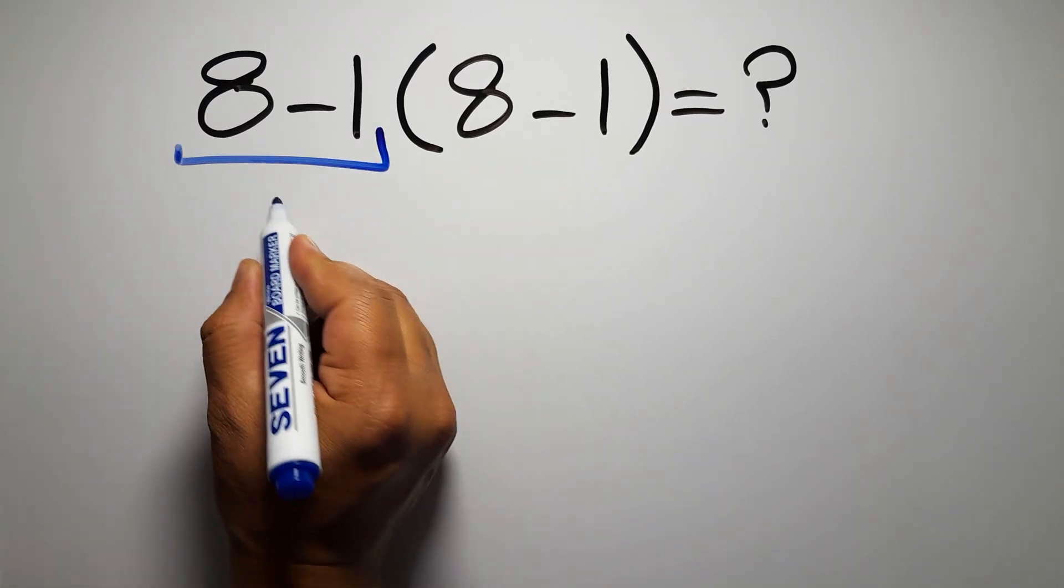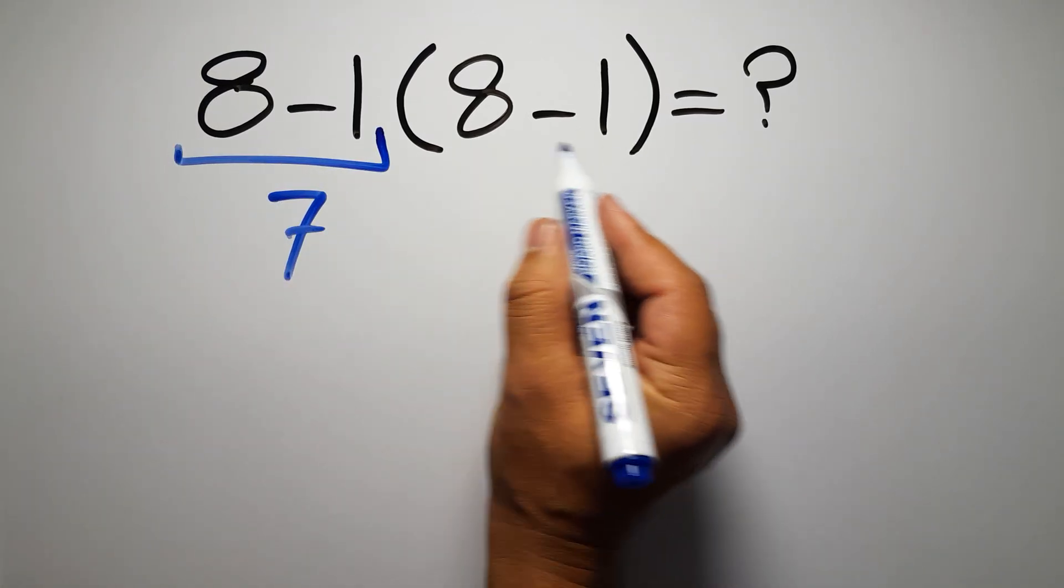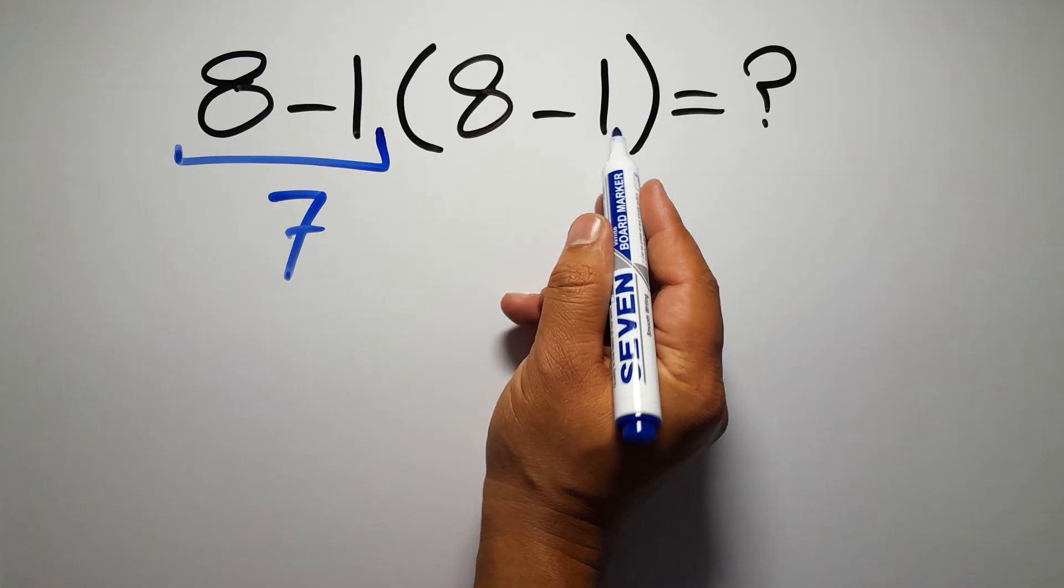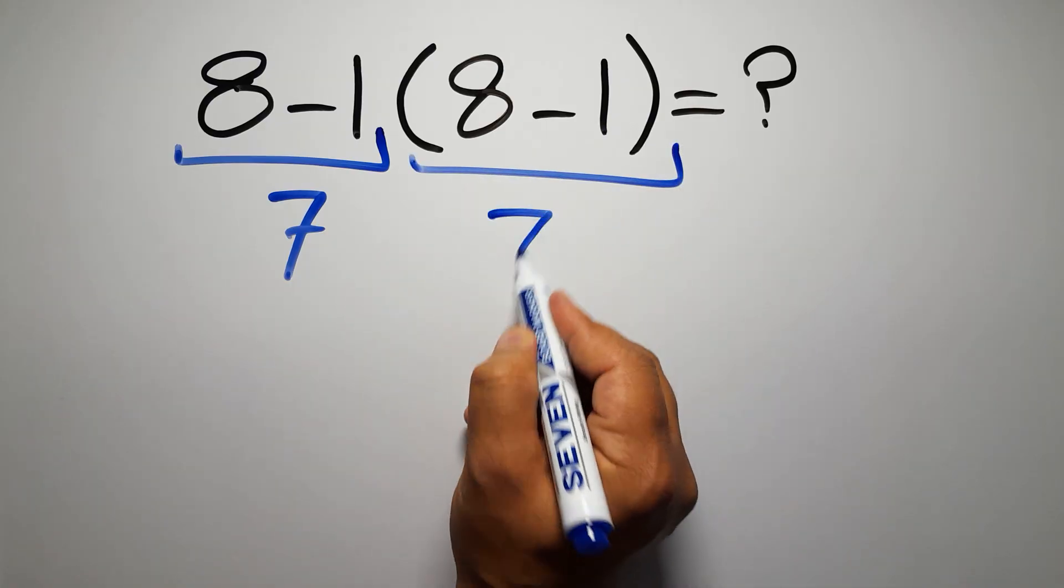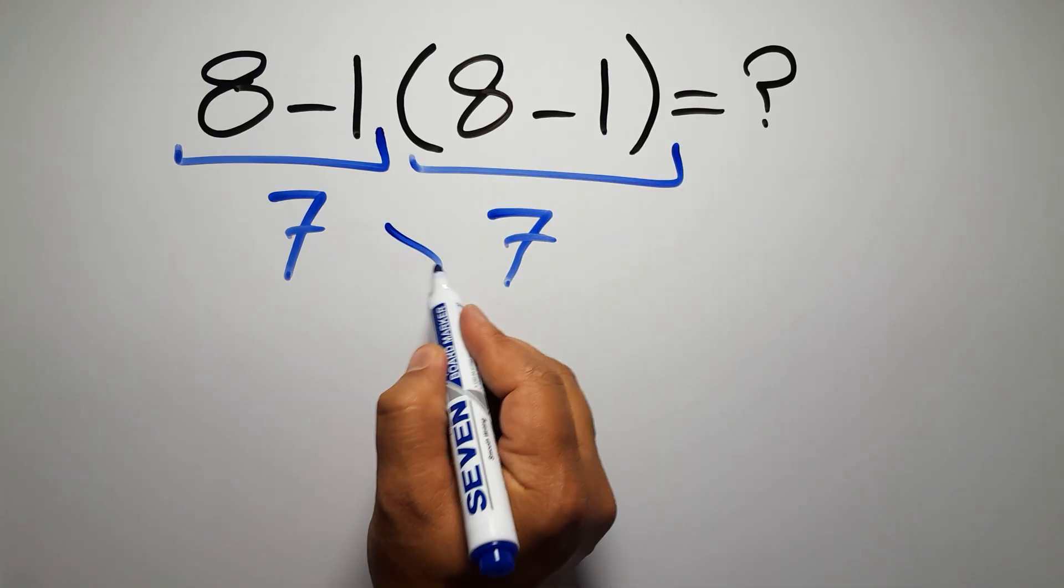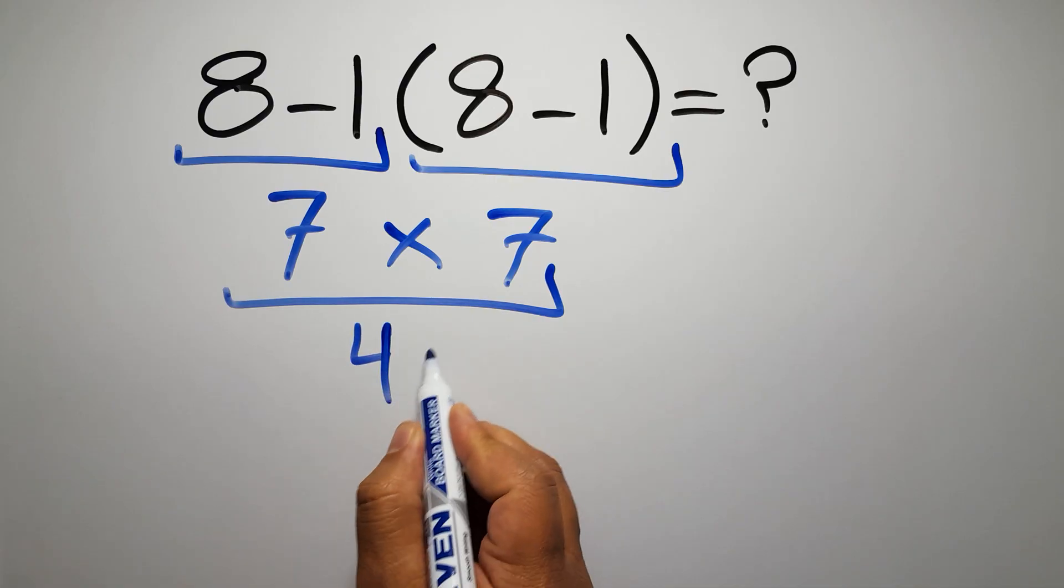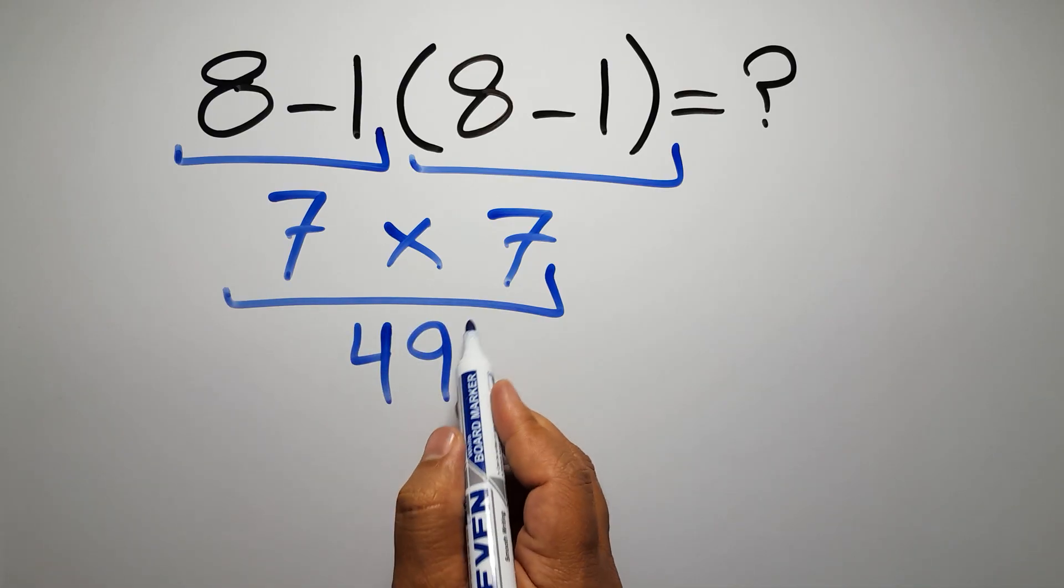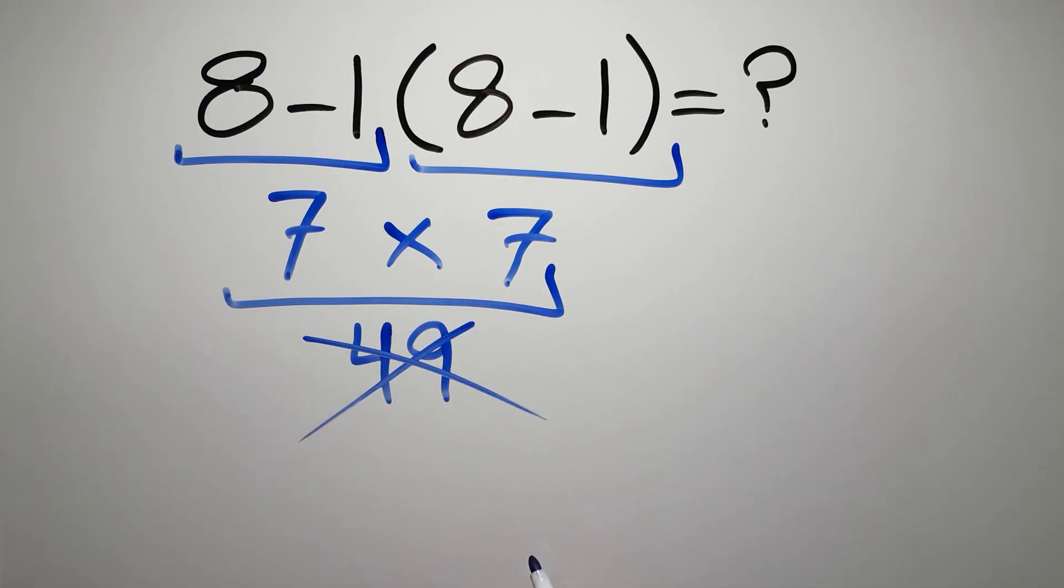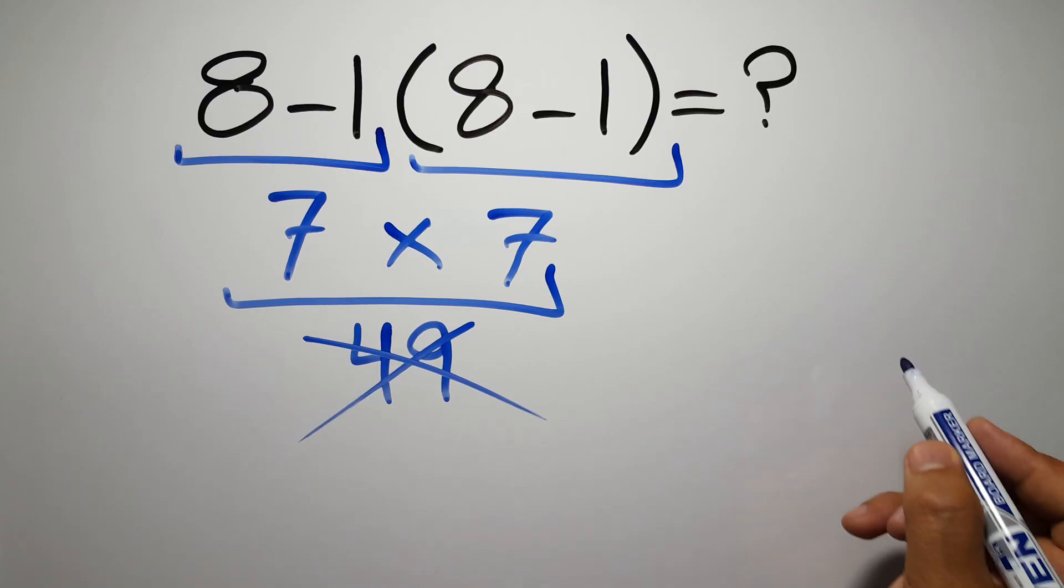8 minus 1 gives us 7, and again here inside these parentheses we have 8 minus 1, so 7 times 7 which equals 49. But this answer is not correct because according to the order of operations, first we have